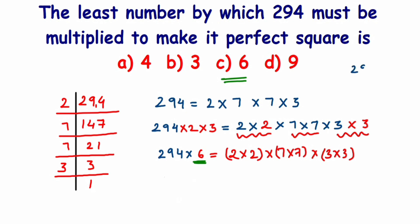294 multiplied by 6. 6 times 4 is 24, carry 2. 6 times 9 is 54, 55, 56. And 6 times 2 is 12, 12 plus 5 will be 17. So we get 1764.